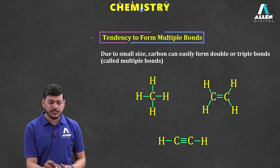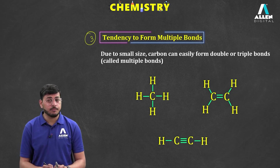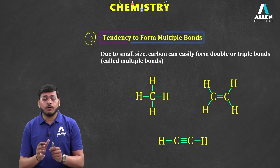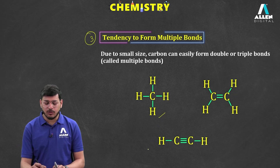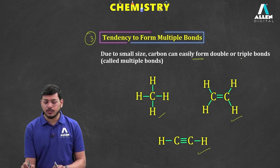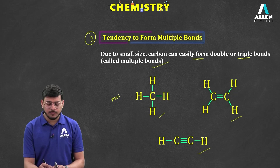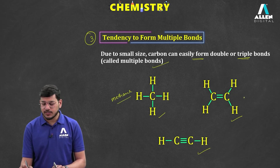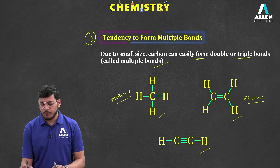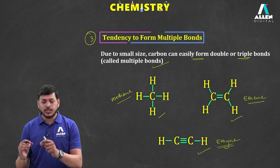The third reason for carbon's versatility is its tendency to form multiple bonds. Carbon can form a single bond as in methane, a double bond as in ethene, or a triple bond as in ethyne. Due to its small size, carbon can easily form double and triple bonds, which are called multiple bonds.